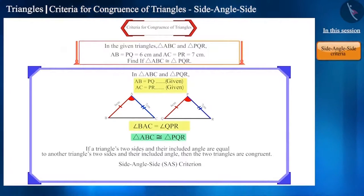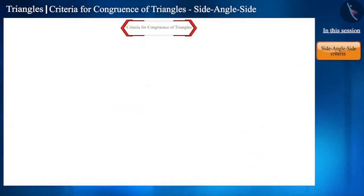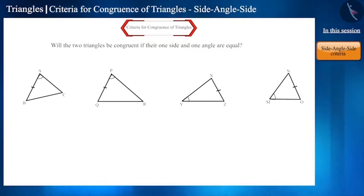Can two triangles be congruent with lesser conditions? For example, one side and one angle of two triangles are equal. Here are some examples.